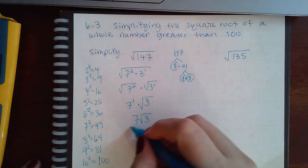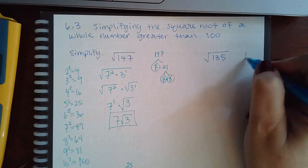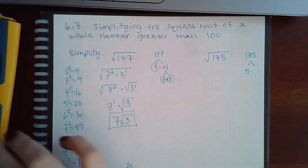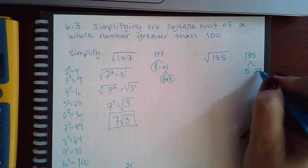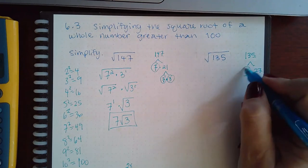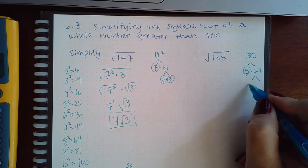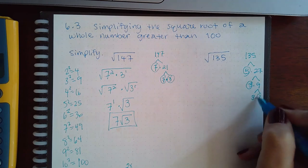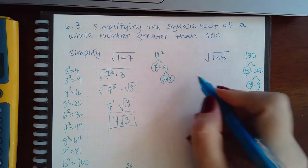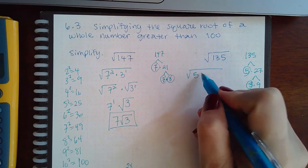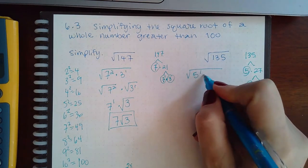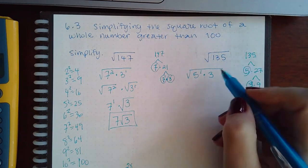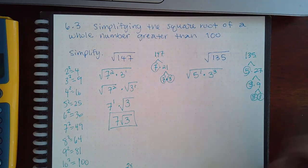Now same thing for 135. I could break it up—I see a 5 at the end, so I know 5 goes into that. 135 divided by 5, my calculator tells me it's 27. This is a prime number, this is not. I can break that up into 3 times 9. 3 is a prime number, I could break up 9 into 3 times 3, and now all the ends are closed. So 135 becomes 5 to the 1 power times 1, 2, 3, 3 to the 3 power.